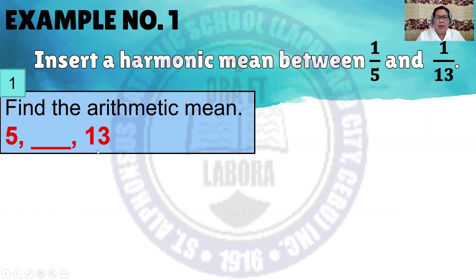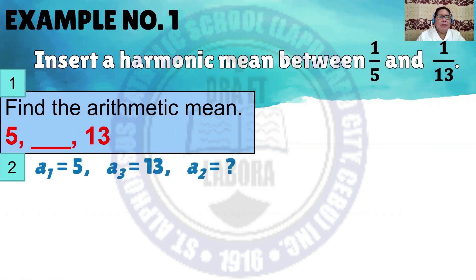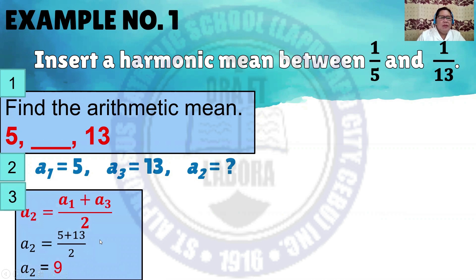We have 5 and 13. Next, identify the first term, which is 5. The third term is 13, so the missing term is the second term, which is the arithmetic mean. To find the arithmetic mean given two terms, we have the formula: A sub 2 is equal to A sub 1 plus A sub 3, over 2.